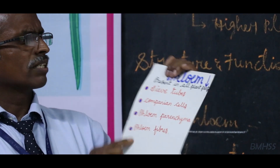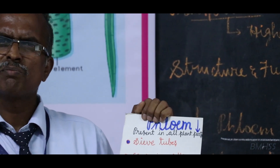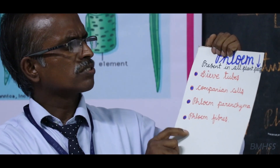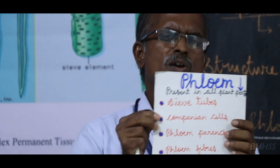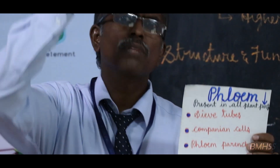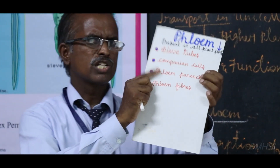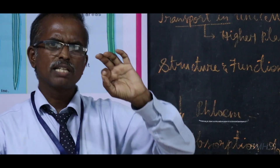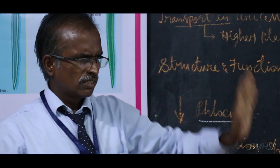Phloem is composed of four important elements and is present in all parts of the plant - root, stem, leaf. The four elements are: sieve tubes, companion cells, phloem parenchyma, and phloem fiber. The main function of phloem is transportation of food material from the leaves to all other parts - upper part as well as lower part. Xylem is responsible for transportation of water and minerals from the root tip to the tip of the plant.